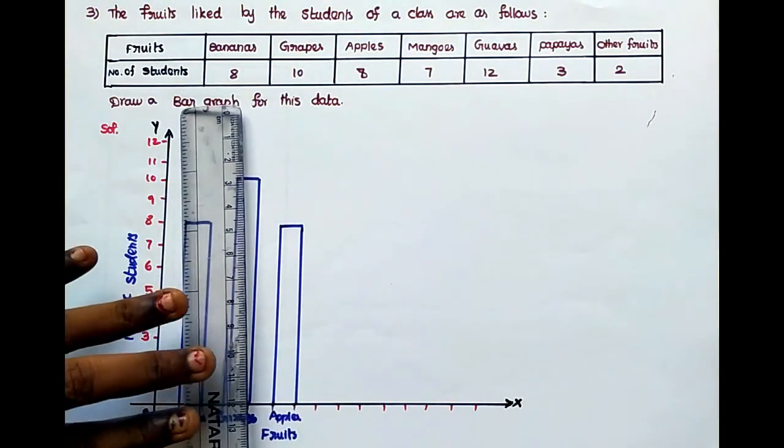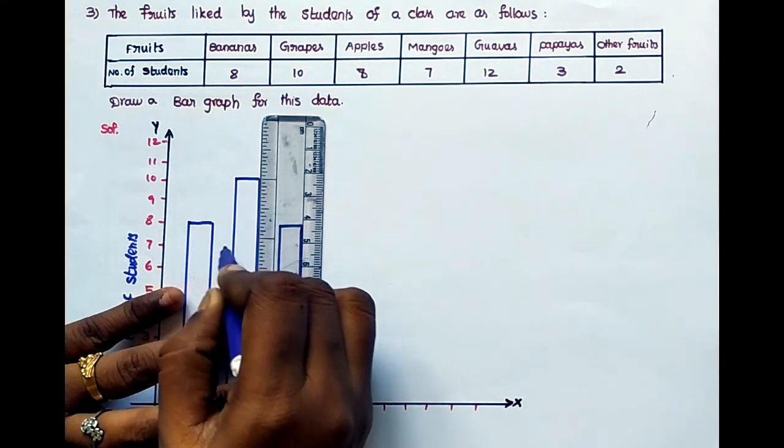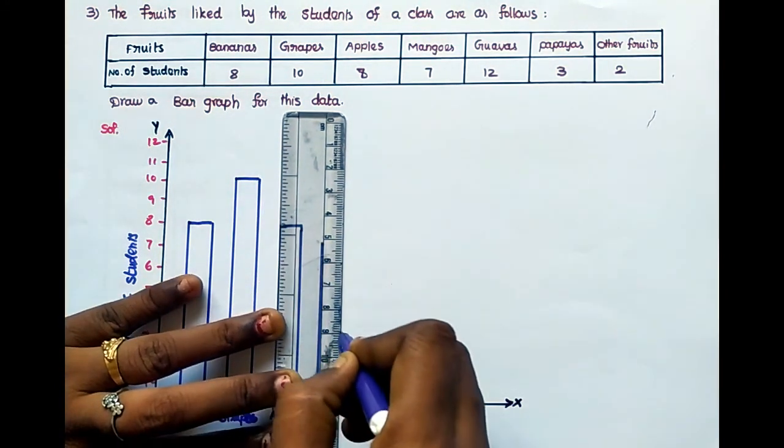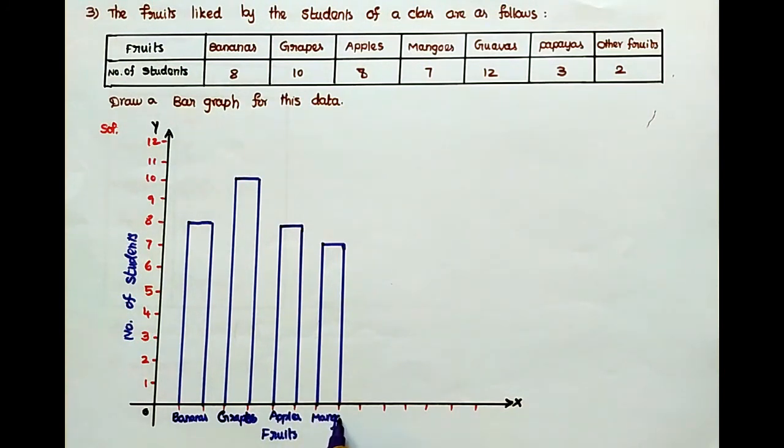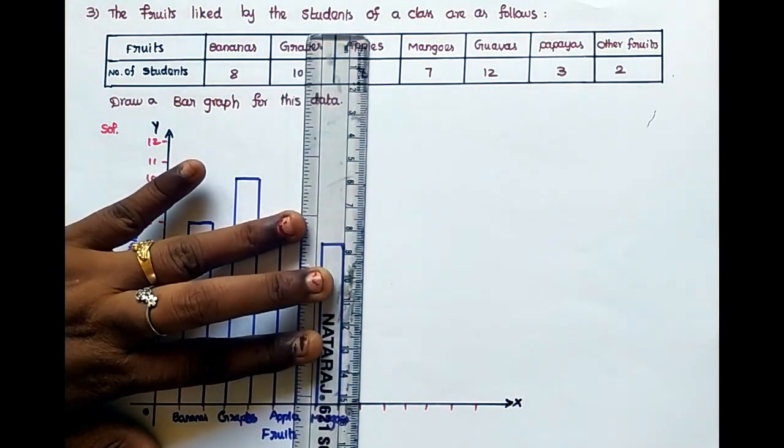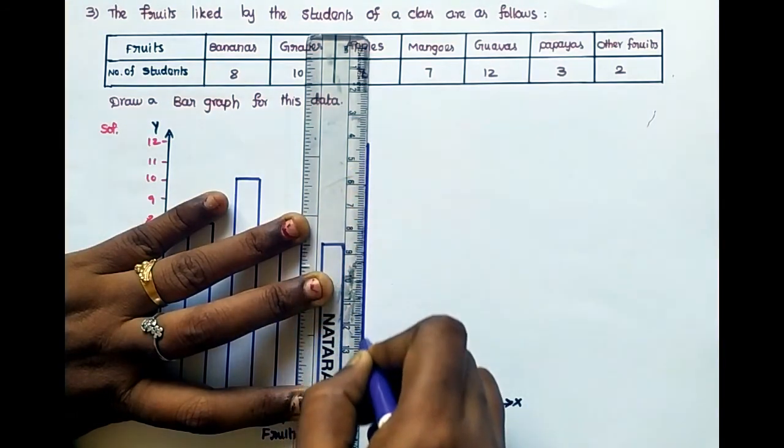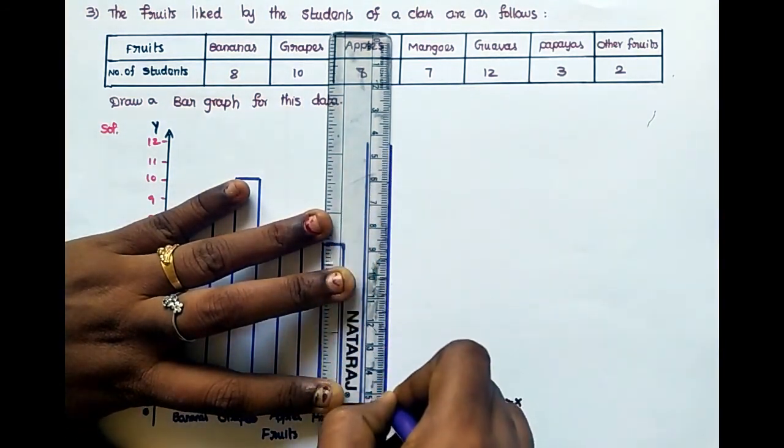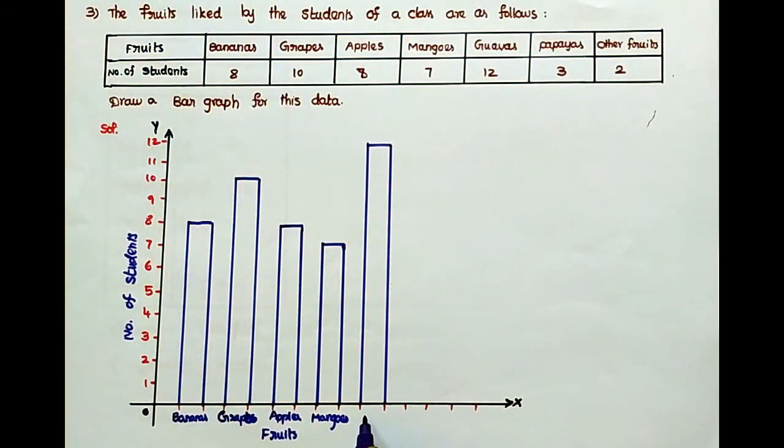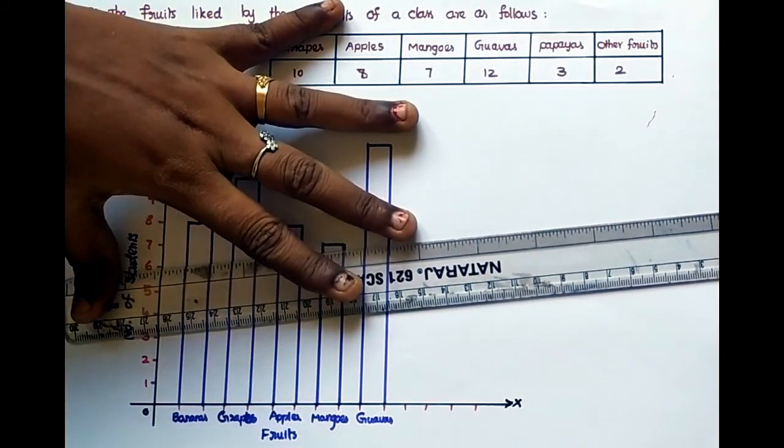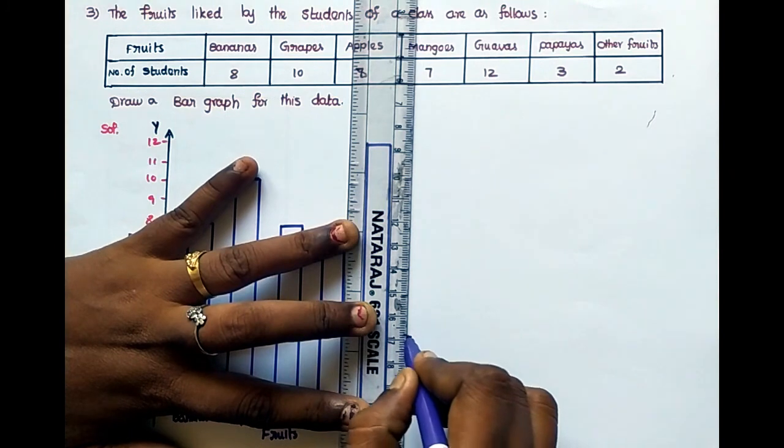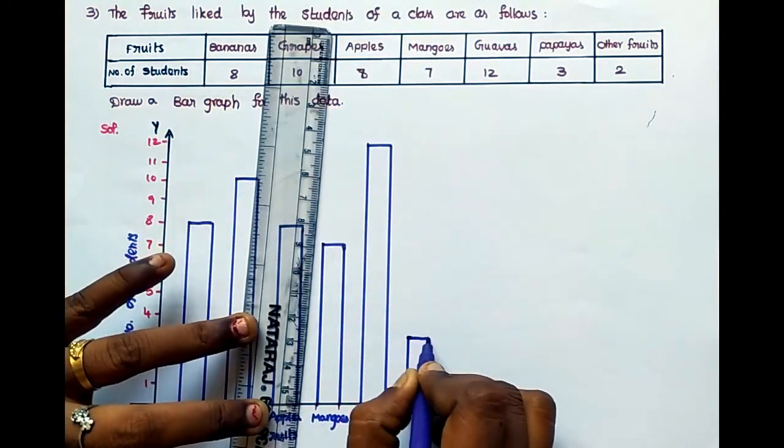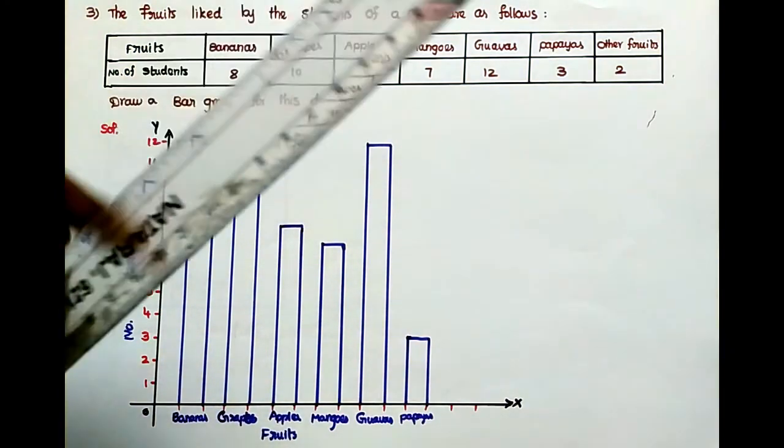Next, mangoes, 7 students. Next, guavas, 12 students. Papayas, just three students only. Other fruits, two students.